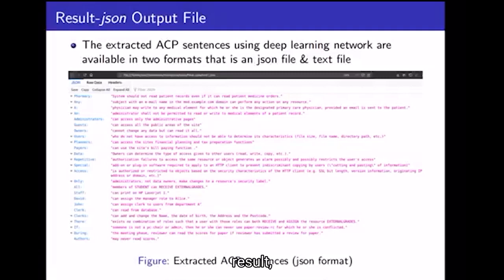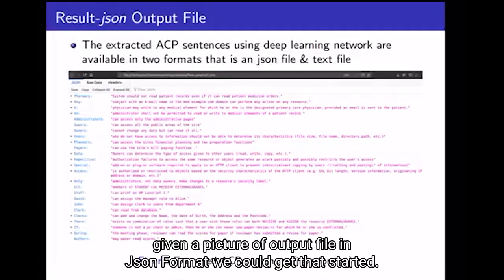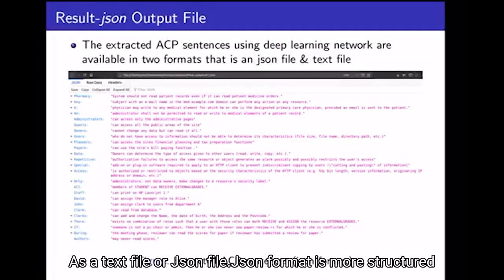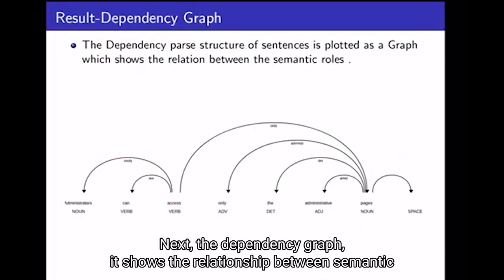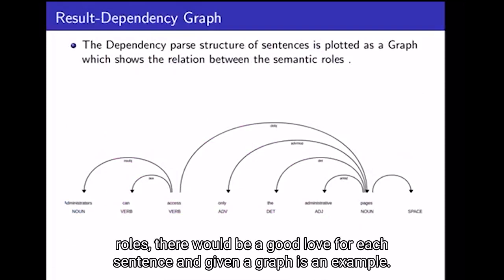The result shows a picture of the output file in JSON format. We could get the extracted sentences as a text file or a JSON file; JSON format is more structured. Next, a dependency graph shows the relationship between semantic roles. There would be a graph for each sentence, and the given graph is an example.